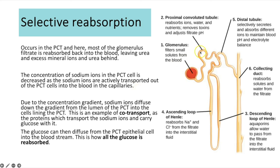Because sodium ion concentration is lower in the epithelial cells than the lumen, sodium ions move from the lumen into the epithelial cells down their concentration gradient, co-transporting glucose with them. The glucose then moves from the epithelial cells into the blood by facilitated diffusion. This is how almost all glucose is reabsorbed from the filtrate back into the blood, which is important because glucose is needed for respiration. Some water is also reabsorbed here as the lower water potential draws water in by osmosis.